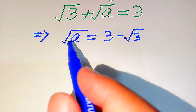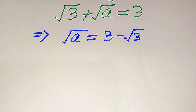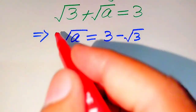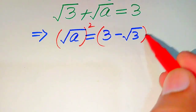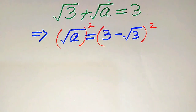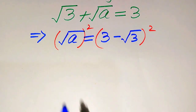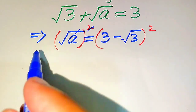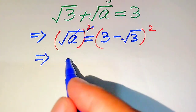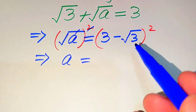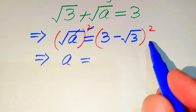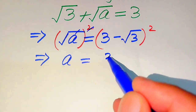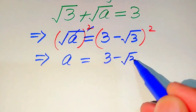In the next step, in order to remove this square root sign, we need to take squaring on both sides. When we square both sides, the square and square root cancel, and we get: a equals 3 minus square root of 3, all squared.